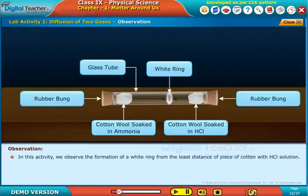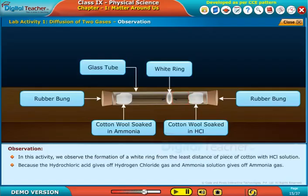In this activity we observe the formation of a white ring from the least distance of piece of cotton with HCl solution, because the hydrochloric acid gives off hydrogen chloride gas and ammonia solution gives off ammonia gas.